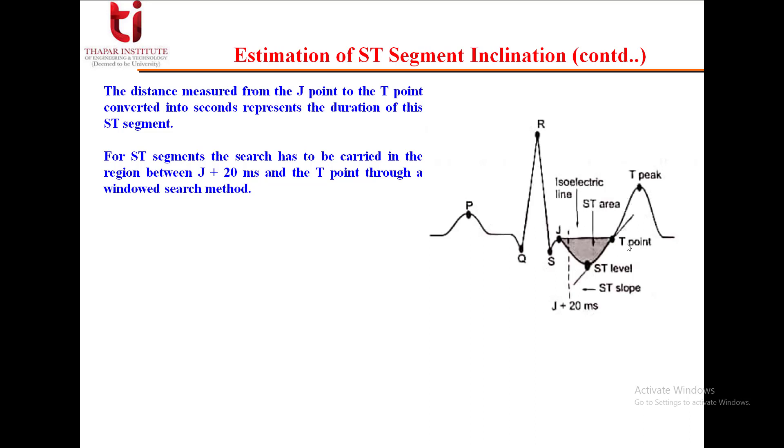The distance measured from the J point to the T point, converted into seconds, represents the duration of the ST segment. For ST segments, the search has to be carried in the region between J plus 20 ms and the T point through a windowed search method. The point of maximal depression or elevation in the window is then identified. The ST segment levels are expressed as the absolute change with respect to the isoelectric line.